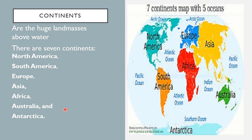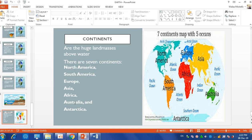The Earth also has continents — seven of them. Continents are huge land masses above water. They are North America, South America, Europe, Asia, Africa, Australia, and Antarctica.